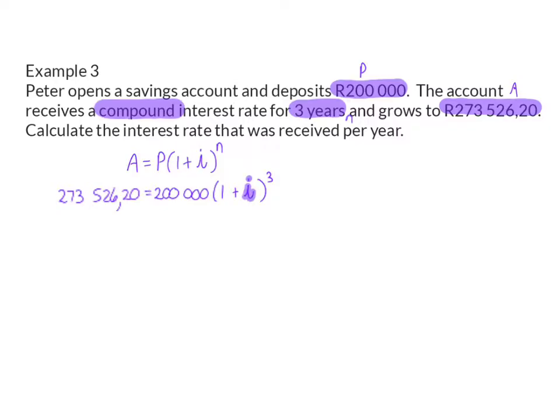Because i is inside the bracket, I need to start off by getting rid of everything on the outside of the bracket. Therefore, to get rid of the R200,000 that is multiplied to the bracket, I'm going to divide by that on the left hand side. On the outside of this bracket I'm still left with a cube.